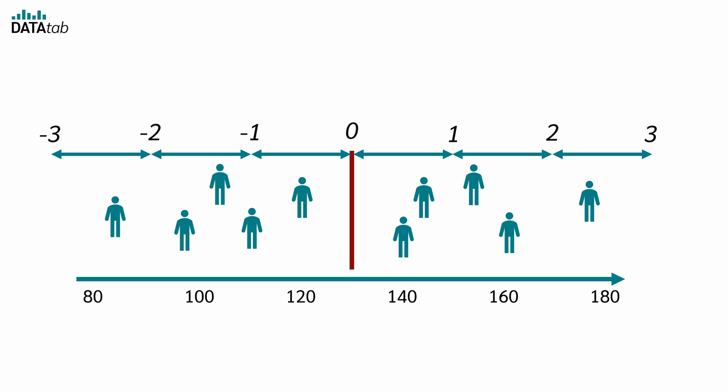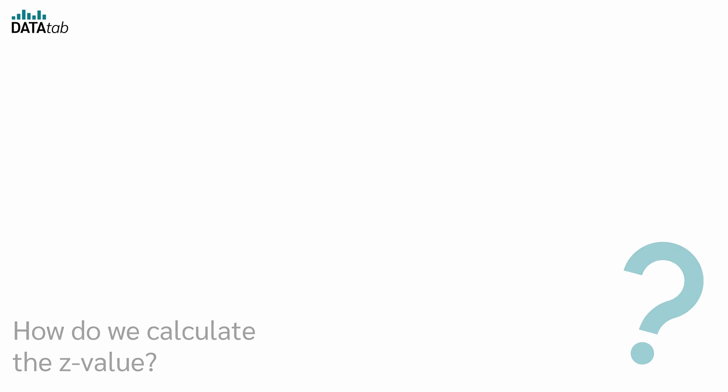The z-value therefore indicates how many standard deviations a measured value is away from the mean value. As already mentioned, the standard deviation is simply a measure of the dispersion of the patient's blood pressure around the mean. In short, the z-score helps us understand how exceptional or normal a particular measurement is compared to the overall average. But how do we calculate the z-value?